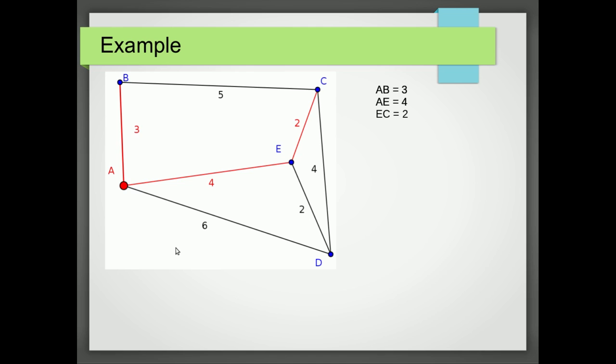So now what's the shortest path connected to A, B, E or C? Well we can see that that's ED. So I'm going to highlight ED and record that by saying ED equals 2.